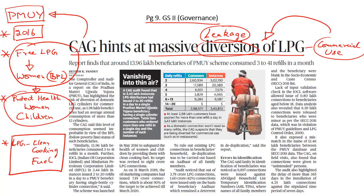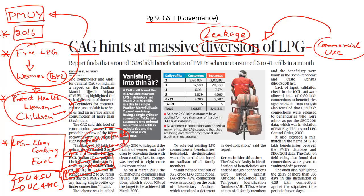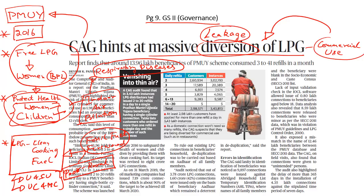LPG is considered a clean cooking fuel but its access is limited to urban and semi-urban areas and to the upper class and middle class. Poor families, especially in rural areas, are still dependent on firewood and other fossil fuels for cooking. This exposes women and children to indoor air pollution and makes them vulnerable to respiratory diseases. The practice of using fossil fuels also places a burden on women and children who have to travel large distances to collect firewood. So the Pradhan Mantri Ujwala Yojana was launched in 2016 and is implemented by the Ministry of Petroleum and Natural Gas to address these challenges.